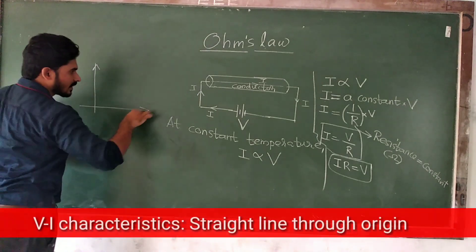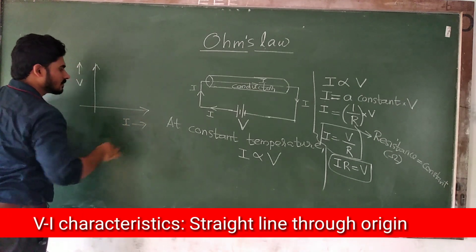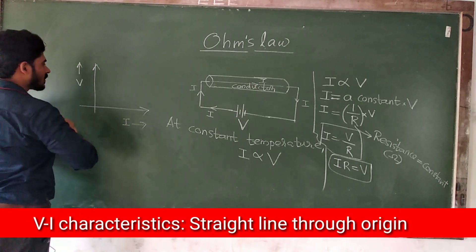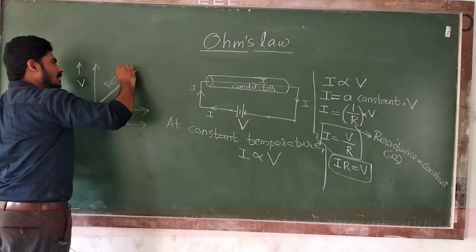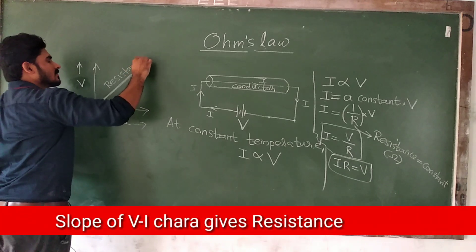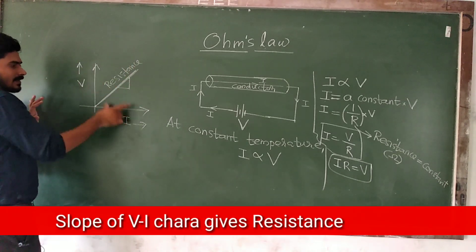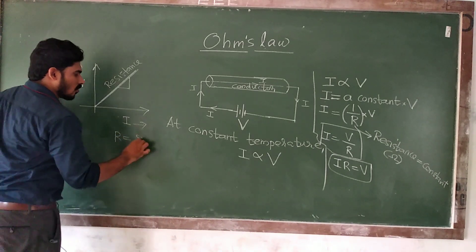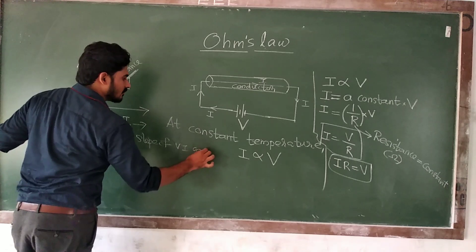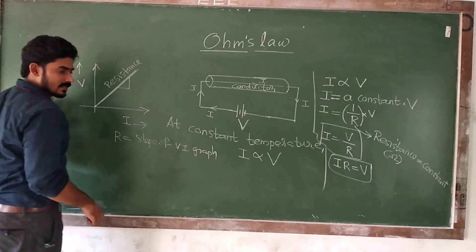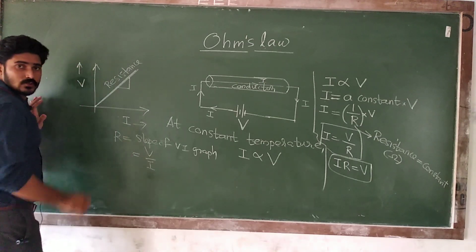We have to look at the V-I graph. The graph is a V-I graph with voltage on one axis and current on the other — a proportional graph. The slope is the y-axis divided by the x-axis, which is V by I. So resistance is equal to the slope of the V-I graph. V by I is equal to R.